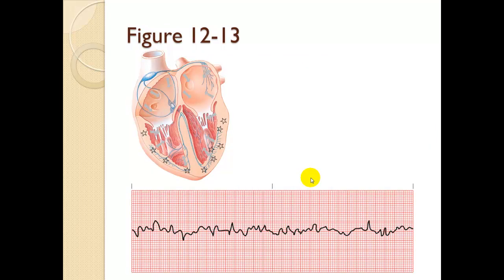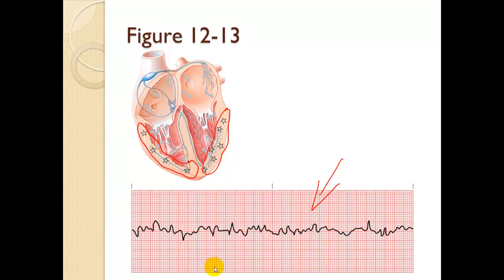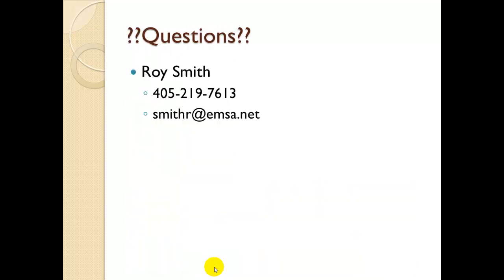If we do not reperfuse sections of myocardium, the anaerobic tissue in the vessels produces a situation where very large sections of myocardium think they are going to take over as the primary pacemaker site — too many chefs in one kitchen. This concludes Part 1. For questions, contact Roy Smith at 405-219-7613 or smithor@emsa.net.